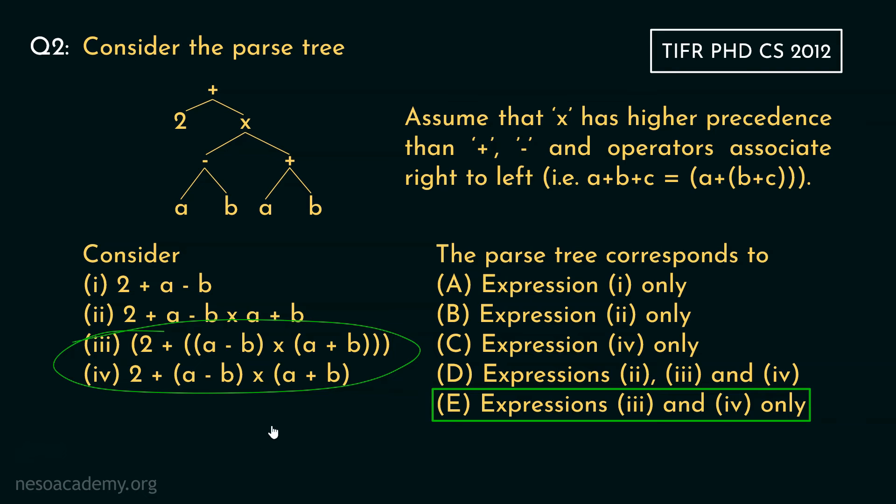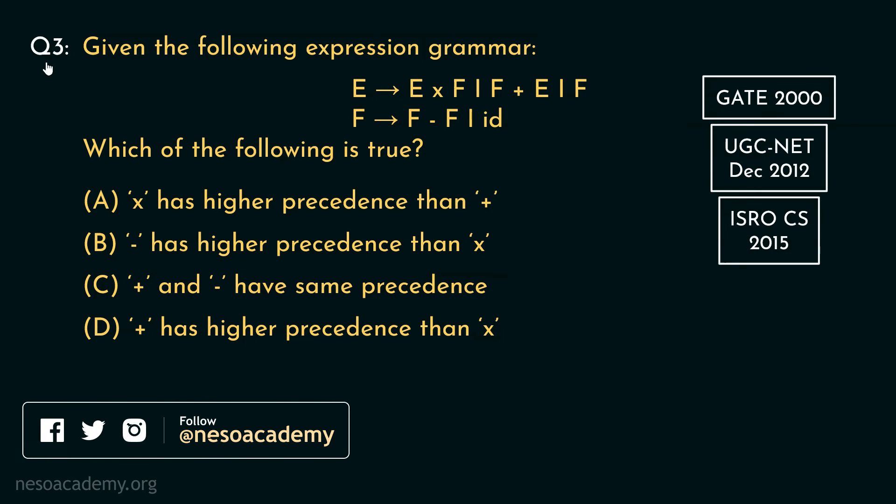Let's move on to the next one. Consider the third question. Given the following expression grammar: E can either be rewritten as E into F or F plus E or F. And F can either be rewritten as F minus F or ID. Basically, E is the start symbol. We are to find out which of the following is true.